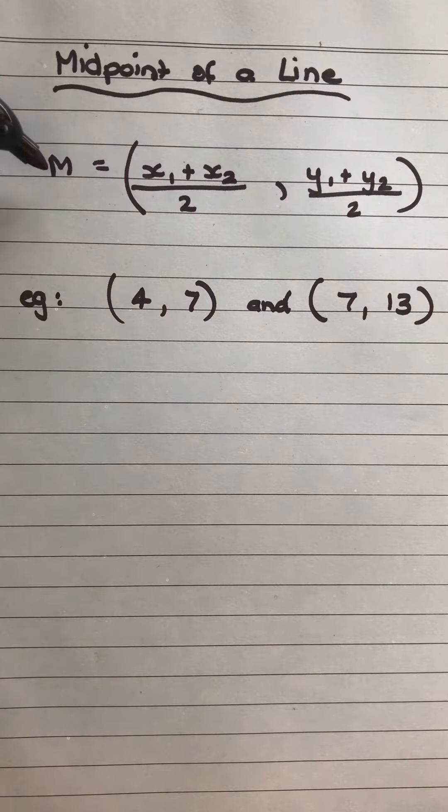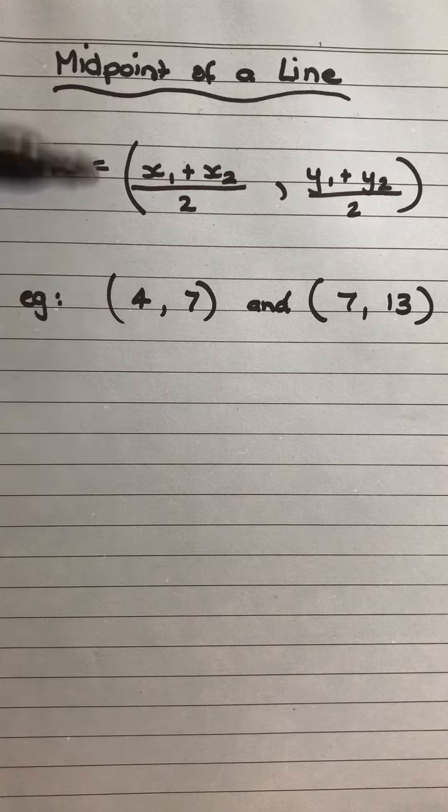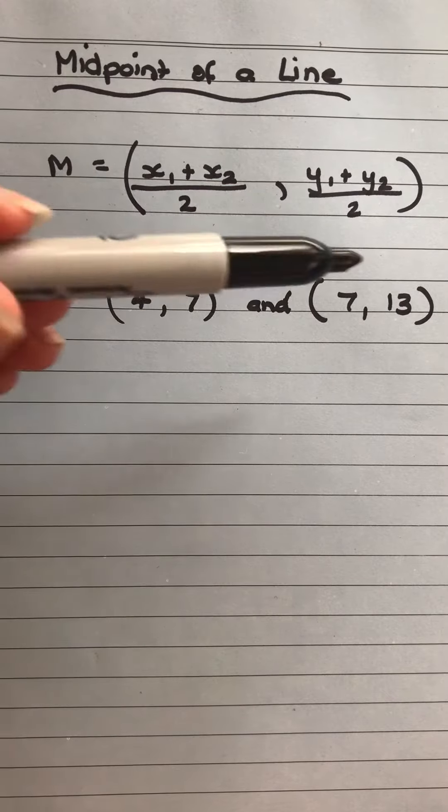Now not to be confused with our small m that we used for gradient, so having a look at an example here, I've got (4,7) and (7,13).